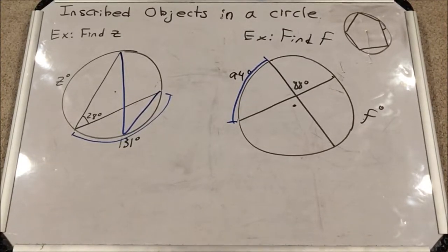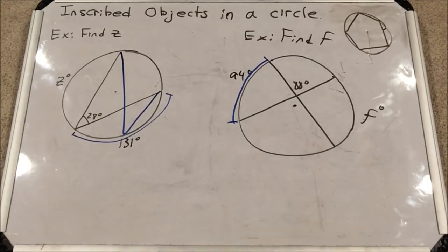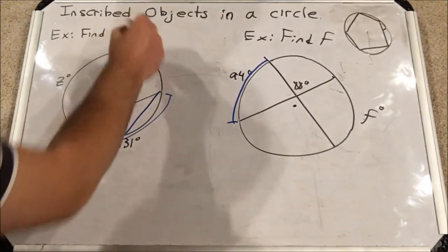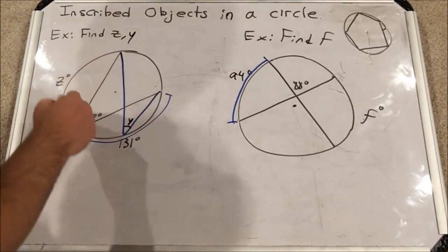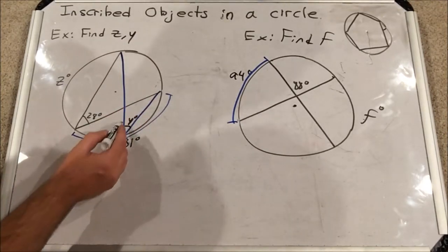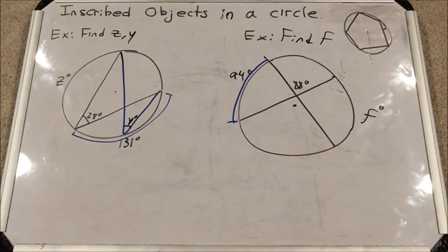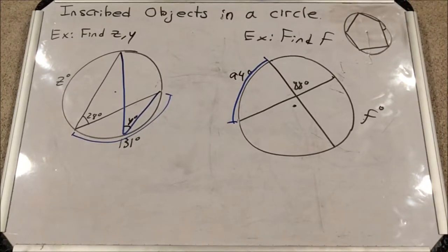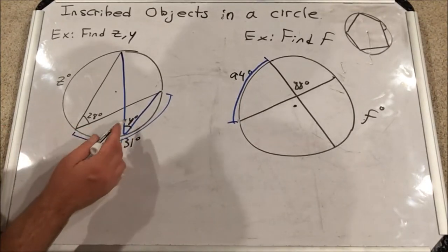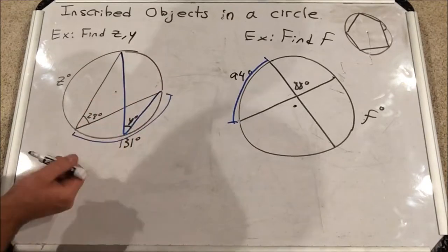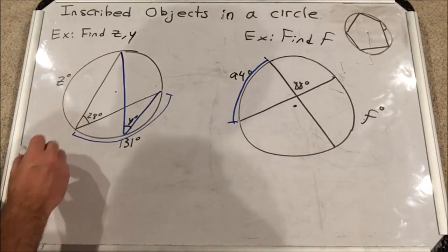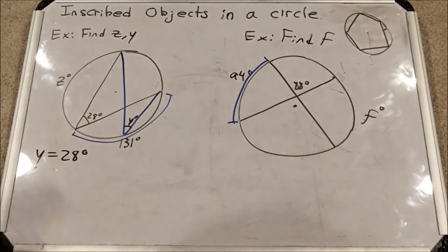So now let's do a few example problems, two to be exact, for inscribed angles. In this first one here, a relatively easy problem, I want you to find both z and y. z is this arc right here, that's its measure in degrees, and then y is the measure of this inscribed angle. Okay, let's start with y.